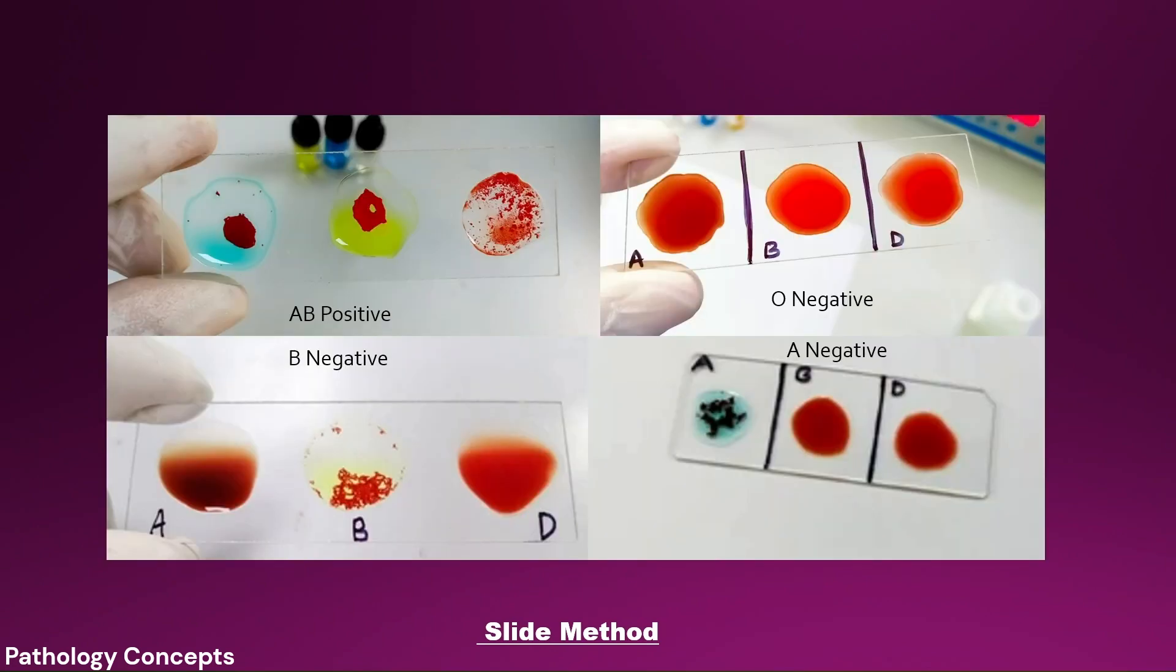This is the actual picture showing slide blood group testing. The first tray shows AB positive, showing agglutination in all three anti-sera. The second picture on the right side shows O negative blood group, showing no agglutination in all three anti-sera.